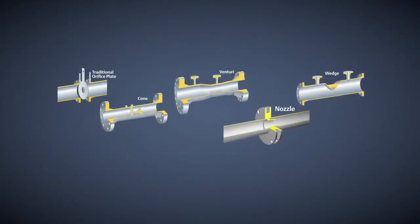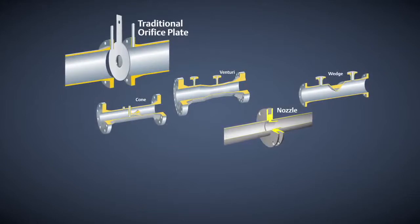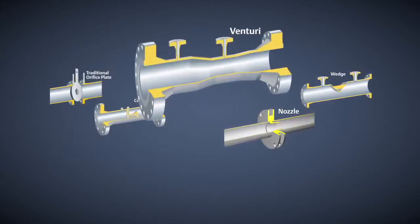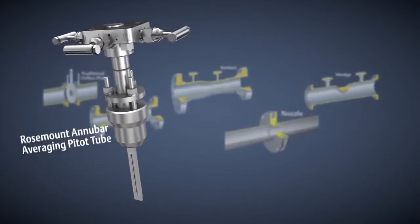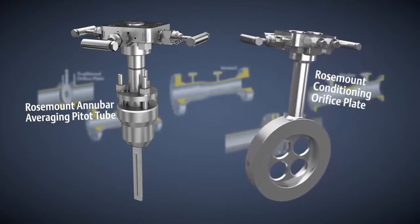There are many types of primary elements, including traditional orifice plate, cone, venturi, nozzle, wedge, Rosemount Annubar averaging pitot tube, and Rosemount conditioning orifice plate.